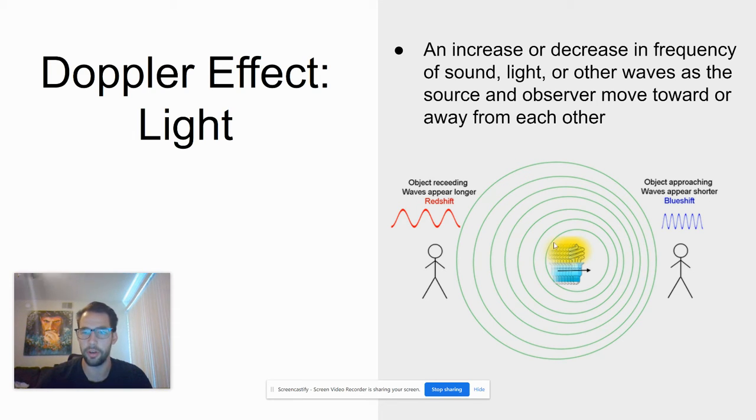In the opposite direction, those waves are going to be more spread out, leading to a lower frequency. And as that light travels away from me, it's going to become more red, or what we call redshift.